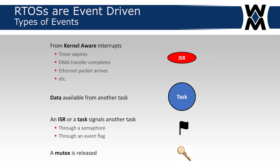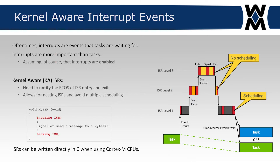An ISR or task can signal another task through a semaphore or event flags. A mutex can be released as well. Kernel-aware interrupts are events that tasks are waiting for. Interrupts are more important than tasks — it's a hardware feature. Kernel-aware ISRs need to notify the RTOS on entry and exit from an ISR, and this allows for nesting of ISRs to avoid multiple scheduling.